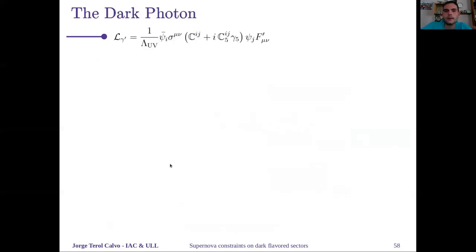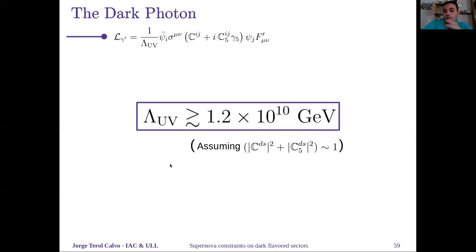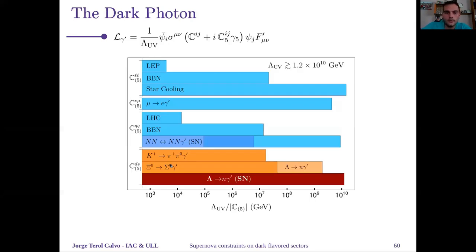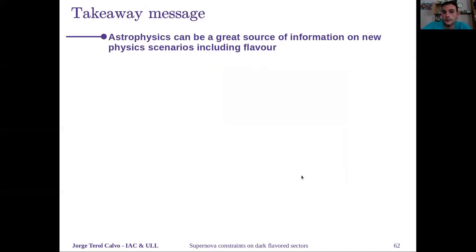For the case of dark photon, we have this dipole-like operator as I have told you. Assuming order-one couplings, we get a bound of the order of 10 to the 10 GeV on the UV scale. Compared to other bounds, it is the strongest limit on quark couplings. In particular, for this coupling that allows for these decays, it is much stronger than the laboratory ones on hyperon and kaon decays and the prospective ones on future experimental hyperon decays.